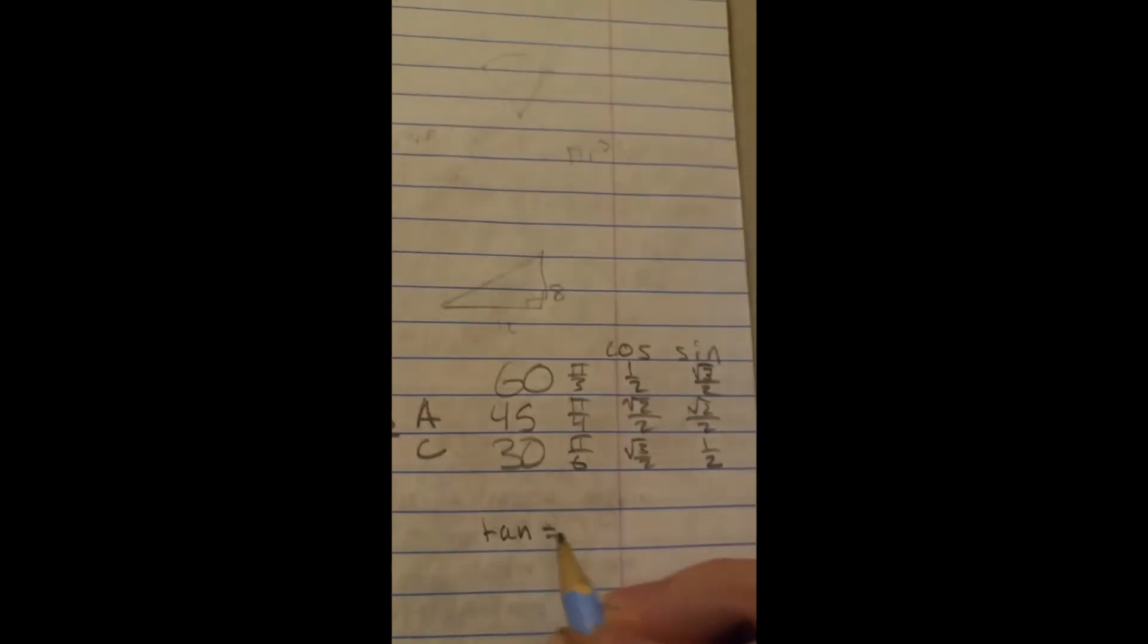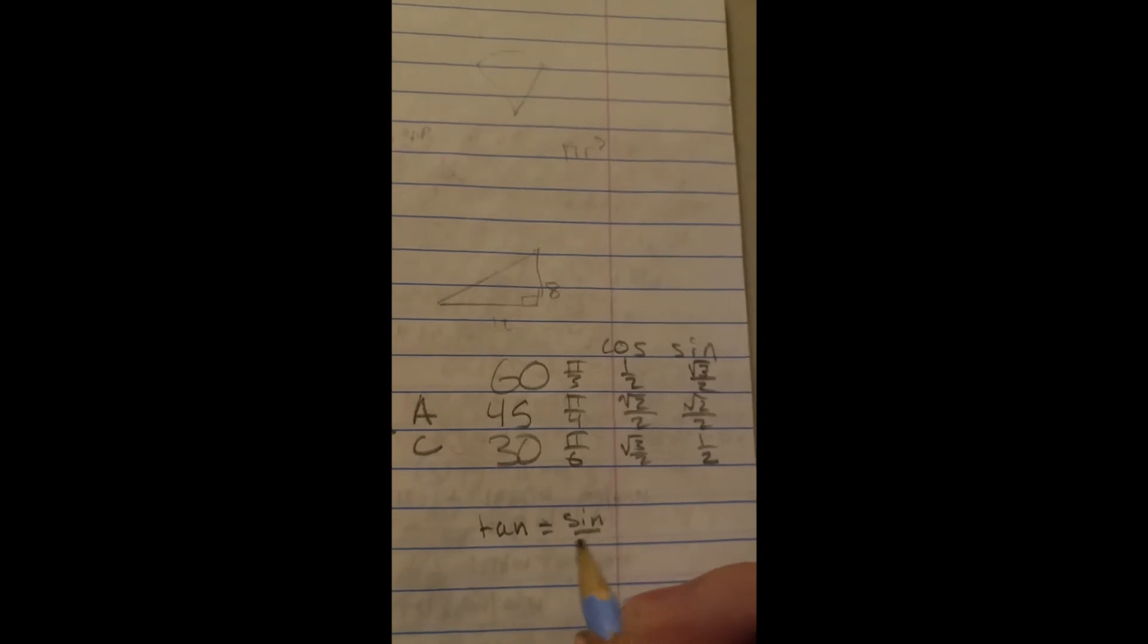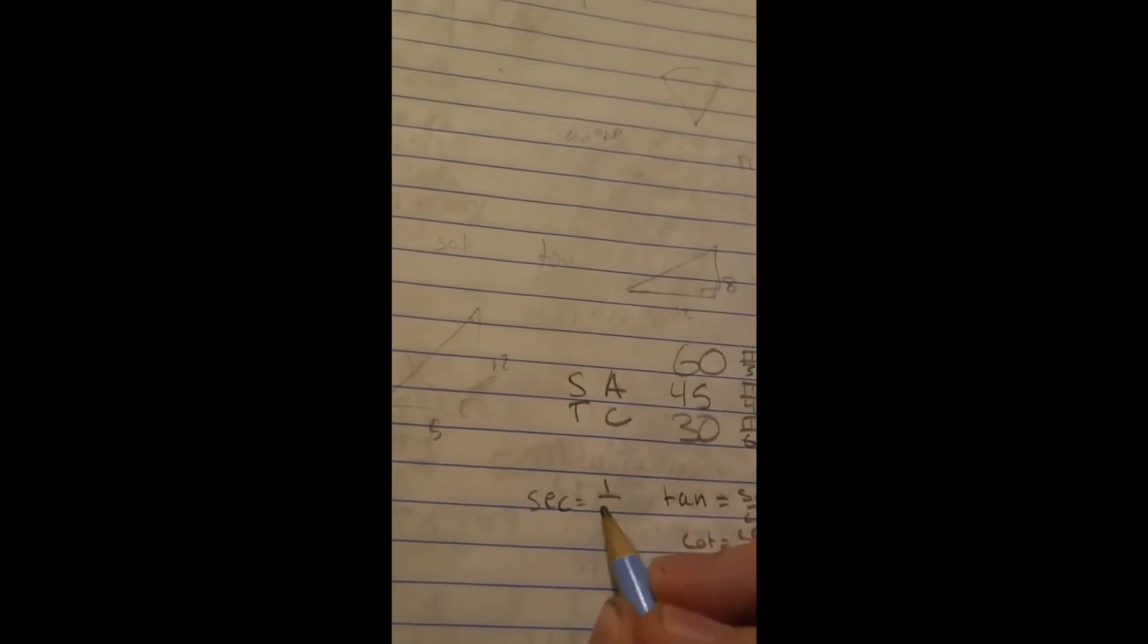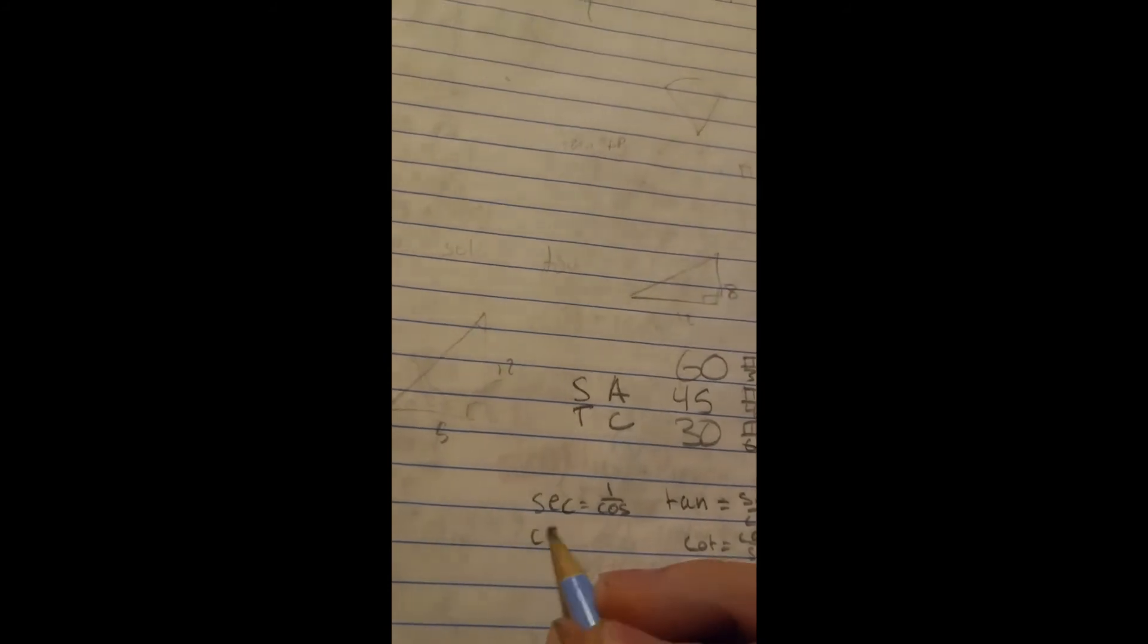Also remember that tangent equals sine over cosine and cotangent equals cosine over sine. Secant equals 1 over cosine and cosecant equals 1 over sine.